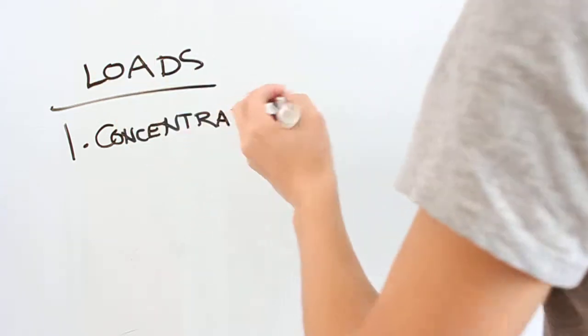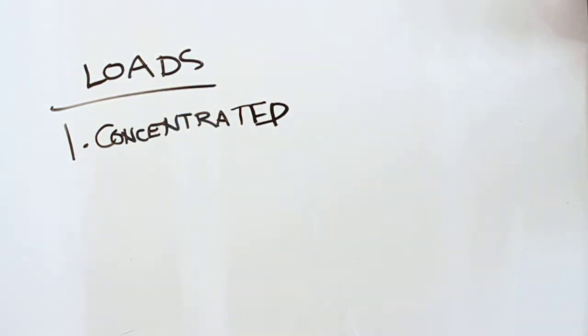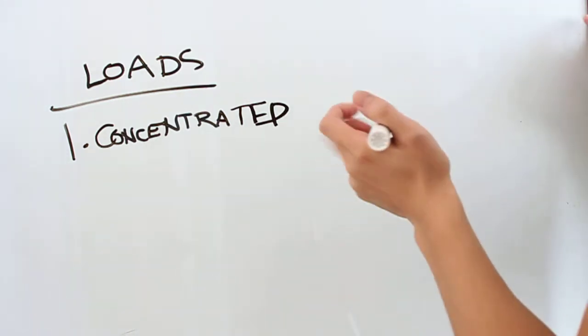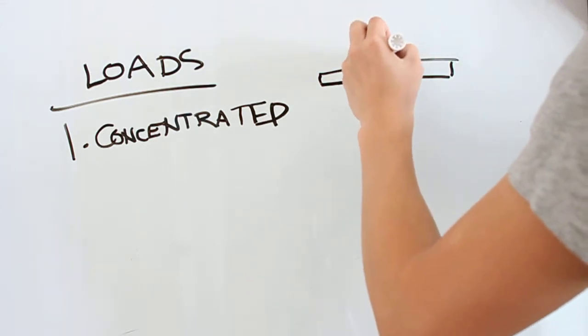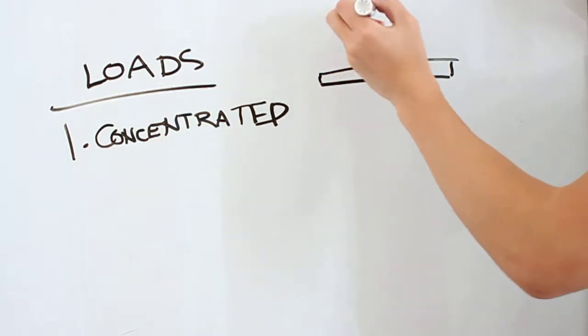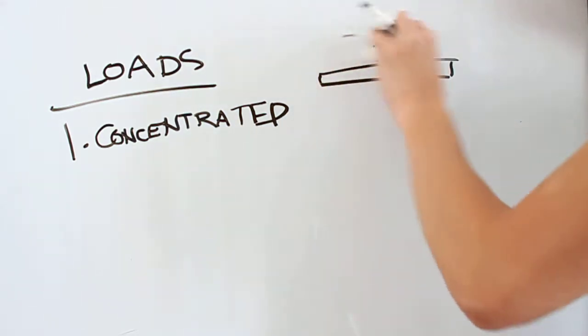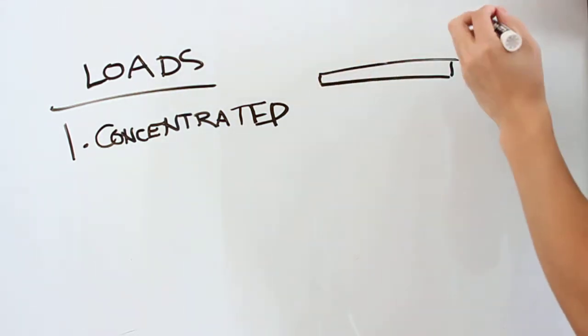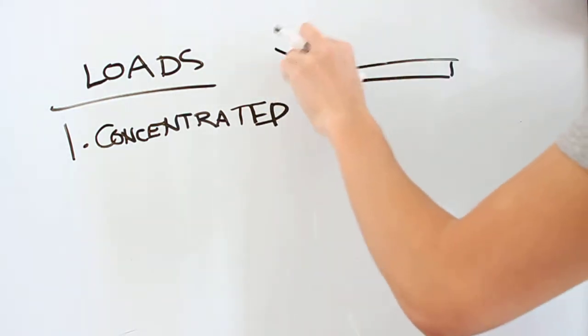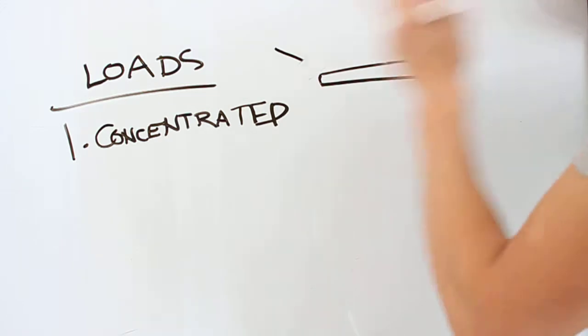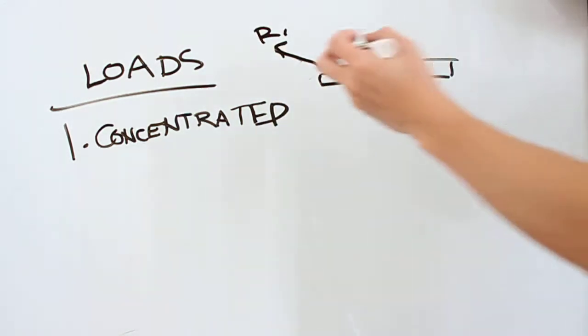And you should think of that point as infinitesimally small for the sake of solving problems. So if you have a beam, then that's a concentrated load of force F. You can have a concentrated load in any direction at any point. It could be this way or it could be in this direction. So R1 is a concentrated load at this point.